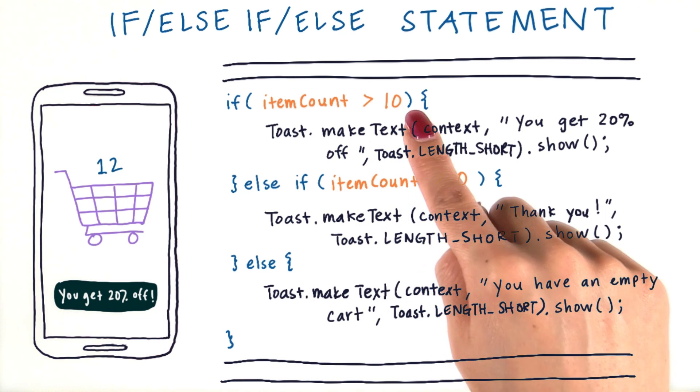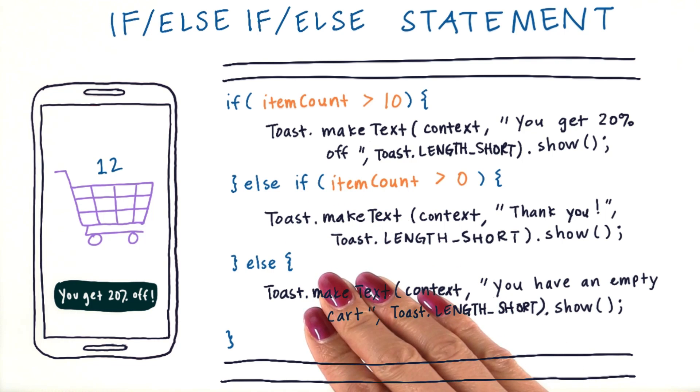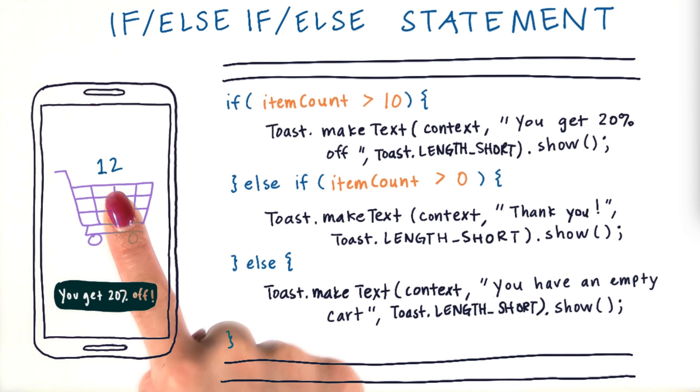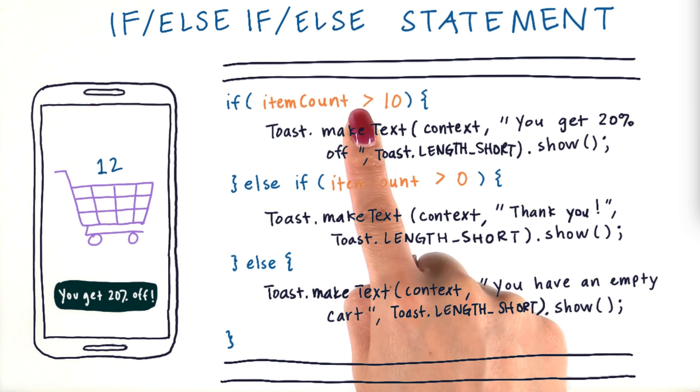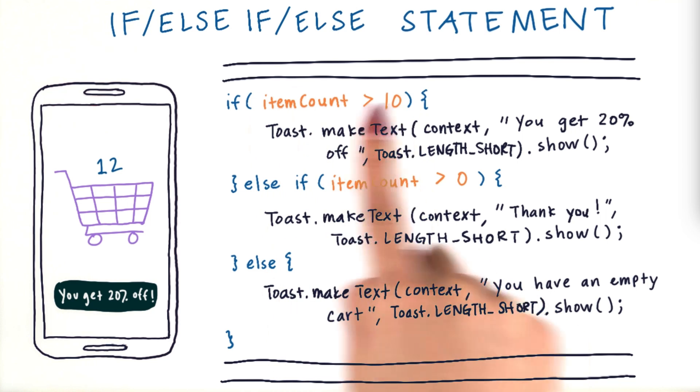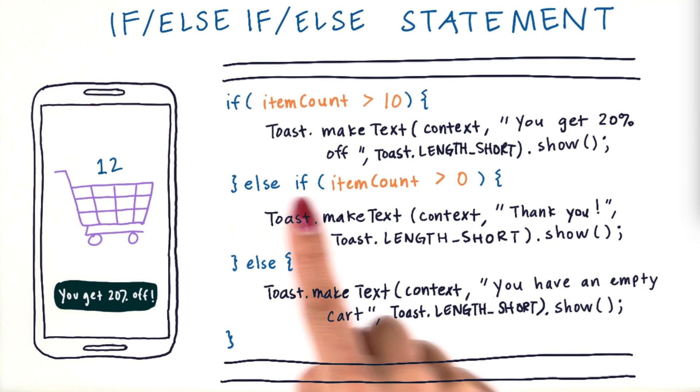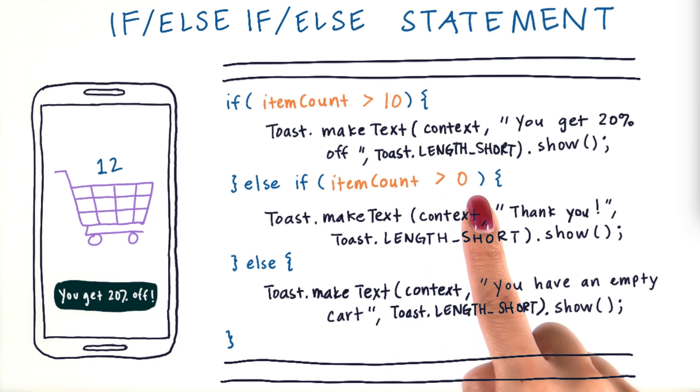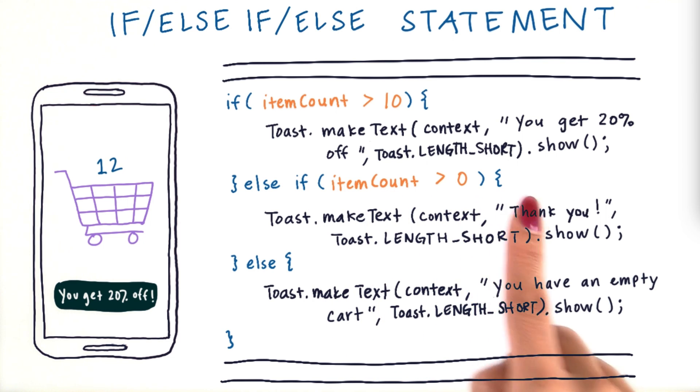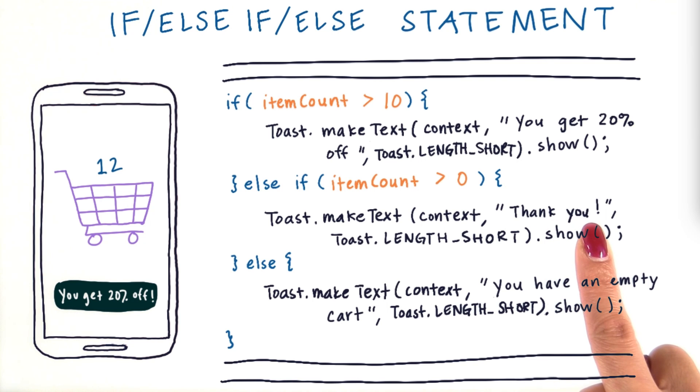Since we fell into this case, then we skip this block and this block, and then we continue with the rest of the code. What would happen if the shopping cart only had two items in it? Well, then item count would not be greater than 10. So this would be false, and we would skip this block of code here, and then jump down to the else if statement. Then we would check if two is greater than zero, and it is, so then we would fall into this case. We would show a toast message that says, thank you. Since we fell into this case, we're going to skip this one, and then we can continue with the rest of the code.